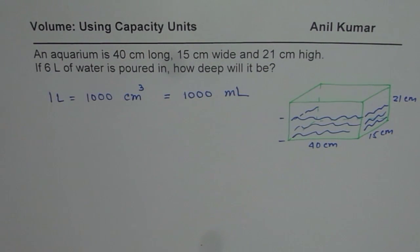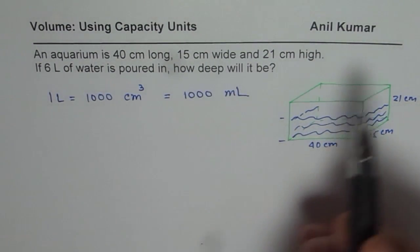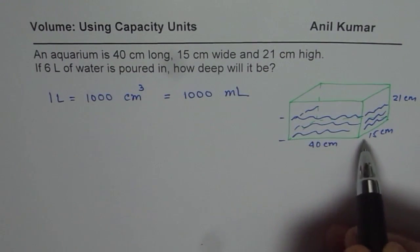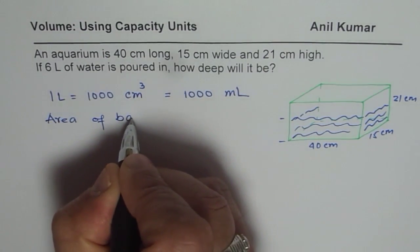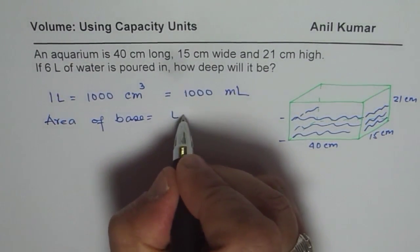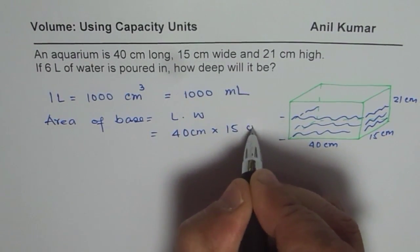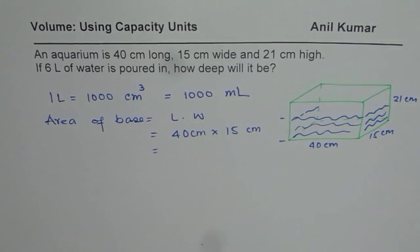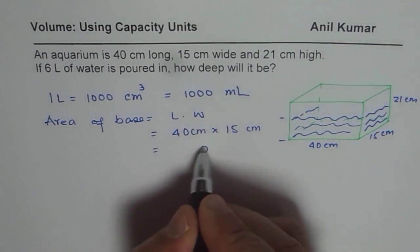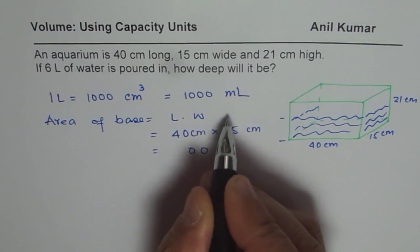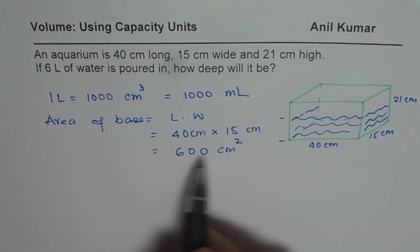The aquarium has a base that is 40 centimeter long and 15 centimeter wide. So what is the area of the base? Area of the base is length times width, which is 40 centimeter times 15 centimeter. When you multiply 40 by 15, you get 600 centimeters square. So that is the area.